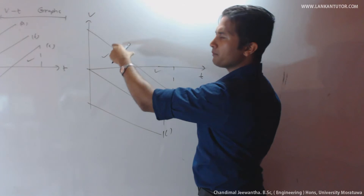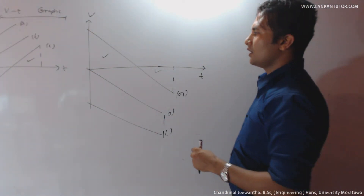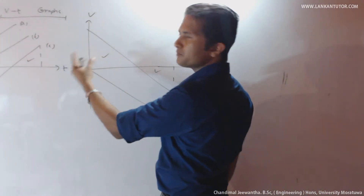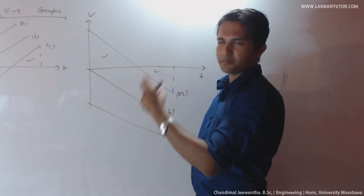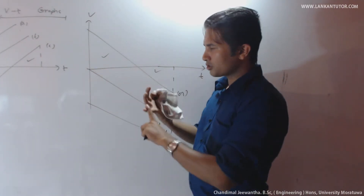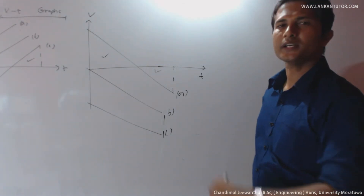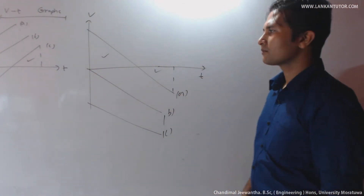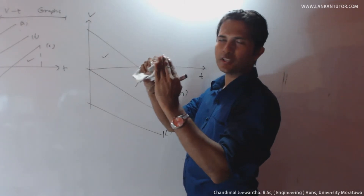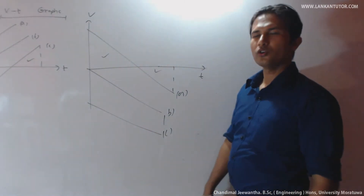Therefore the final displacement is zero. Considering simple B: starts from the origin with zero initial velocity, goes through the origin, and manages to move with uniform acceleration towards the negative direction. Considering simple C: there is negative velocity initially, meaning the object faces the negative direction, then moves with uniform acceleration towards the negative direction continuously.